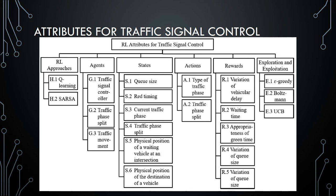For reinforcement learning attributes in traffic signal control, agents can be the traffic signal controller, traffic phase split time or the traffic movement itself. States can include queue size of vehicles at an intersection, red timing, current traffic controller phase, traffic phase split, and physical position of the vehicle and its destination. The two actions are choosing the next type of traffic phase and the traffic phase split. The reward aims to reduce congestion, metrically expressed as vehicular delay, waiting time, appropriateness of green time, and variation of queue size.